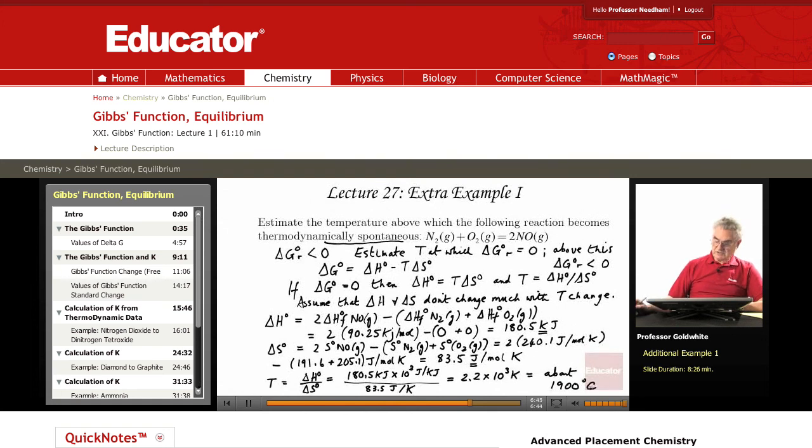Above that temperature, as we can see from the nature of the materials involved, delta G will become negative. At that temperature, we estimate delta G equals zero.